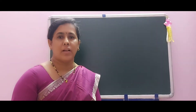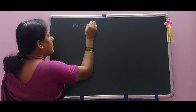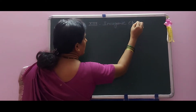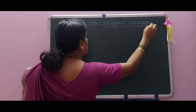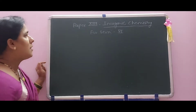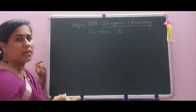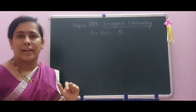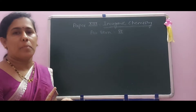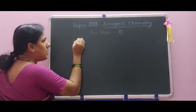Hello everyone, today we are going to discuss the new topic from Paper Number 13, that is Inorganic Chemistry. The name of the paper is Inorganic Chemistry, also equal to Paper 6 in the extended syllabus numbering. This paper is called Paper Number 13, 14, 15, and 16, and it concludes a total of five topics.